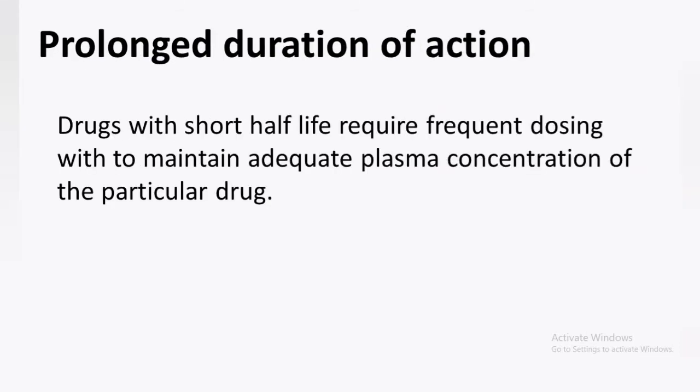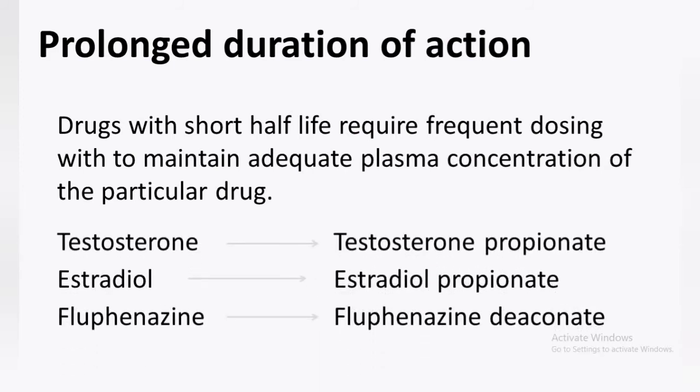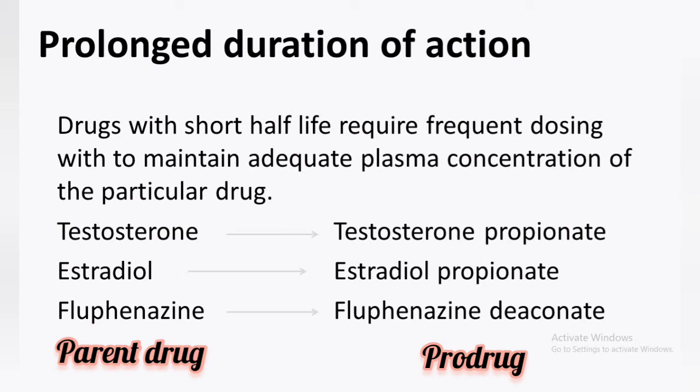Drugs with a short half-life require frequent dosing with conventional dosage forms. So, to maintain adequate plasma concentration, the drug is converted to its Pro-drug. For example, Testosterone Propionate, the Pro-drug of Testosterone, has prolonged action compared to conventional Testosterone. Estradiol is converted to Estradiol Propionate to prolong the duration of action. Fluphenazine is converted to its Pro-drug Fluphenazine Decanoate for a prolonged effect of action.